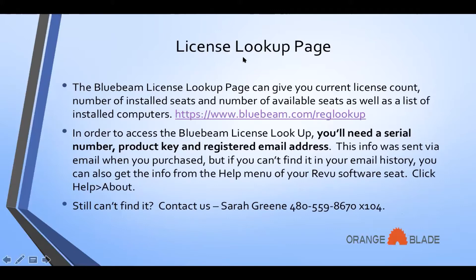Diving right in — the License Lookup page. The Bluebeam License Lookup page gives you your current license count, the number of installed seats, the number of available seats, and a list of installed computers. The License Lookup page can be found at www.bluebeam.com/reglookup. To access it, you'll need your serial number, product key, and the registered email address for that serial info. This info was sent via email when you purchased.